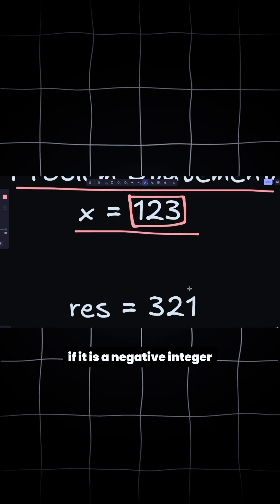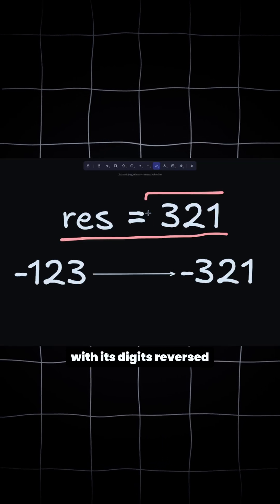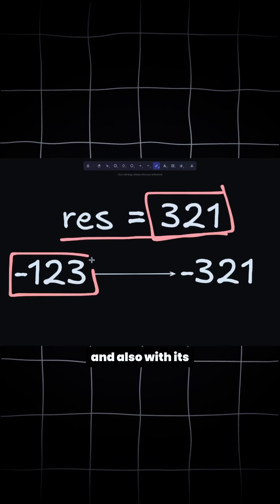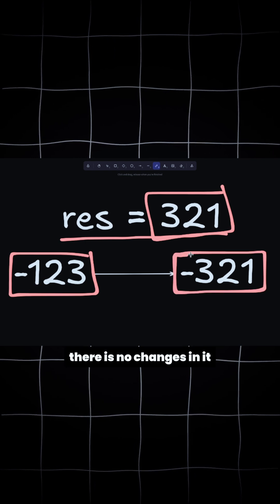If it is a negative integer, then we return the integer with its digits reversed and also with its negative sign. The sign is returned as it is - there are no changes in it.